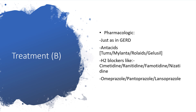If lifestyle modification has not resolved the problem, we move to pharmacological intervention, just as with gastroesophageal reflux disease treatment. You can start with antacids. Then H2 receptor blockers like cimetidine, ranitidine, famotidine, and nizatidine. And of course proton pump inhibitors like omeprazole, pantoprazole, and lansoprazole could help as pharmacological interventions — your doctor will guide you through that.